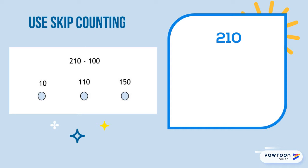We're starting at 210, skip counting by hundreds. But how many times do we have to skip count backwards? Well, it's only 100, so that means one time. So let's go: 210, 110. I see 110 as one of the options for the answers — it's right here. We did it again.